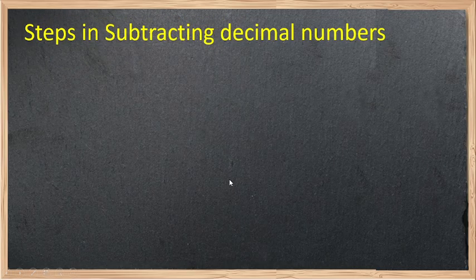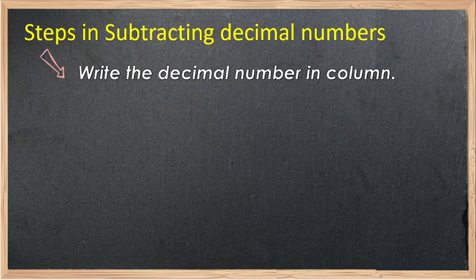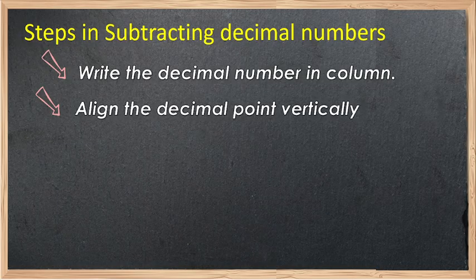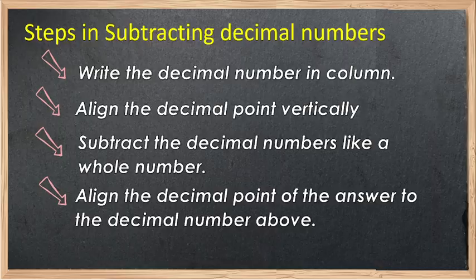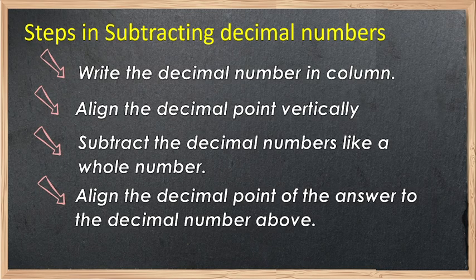Steps in subtracting decimal numbers: First, write the decimal numbers in column. Second, align the decimal point vertically. Third, subtract the decimal numbers like whole numbers. Then align the decimal point of the answer to the decimal numbers above.